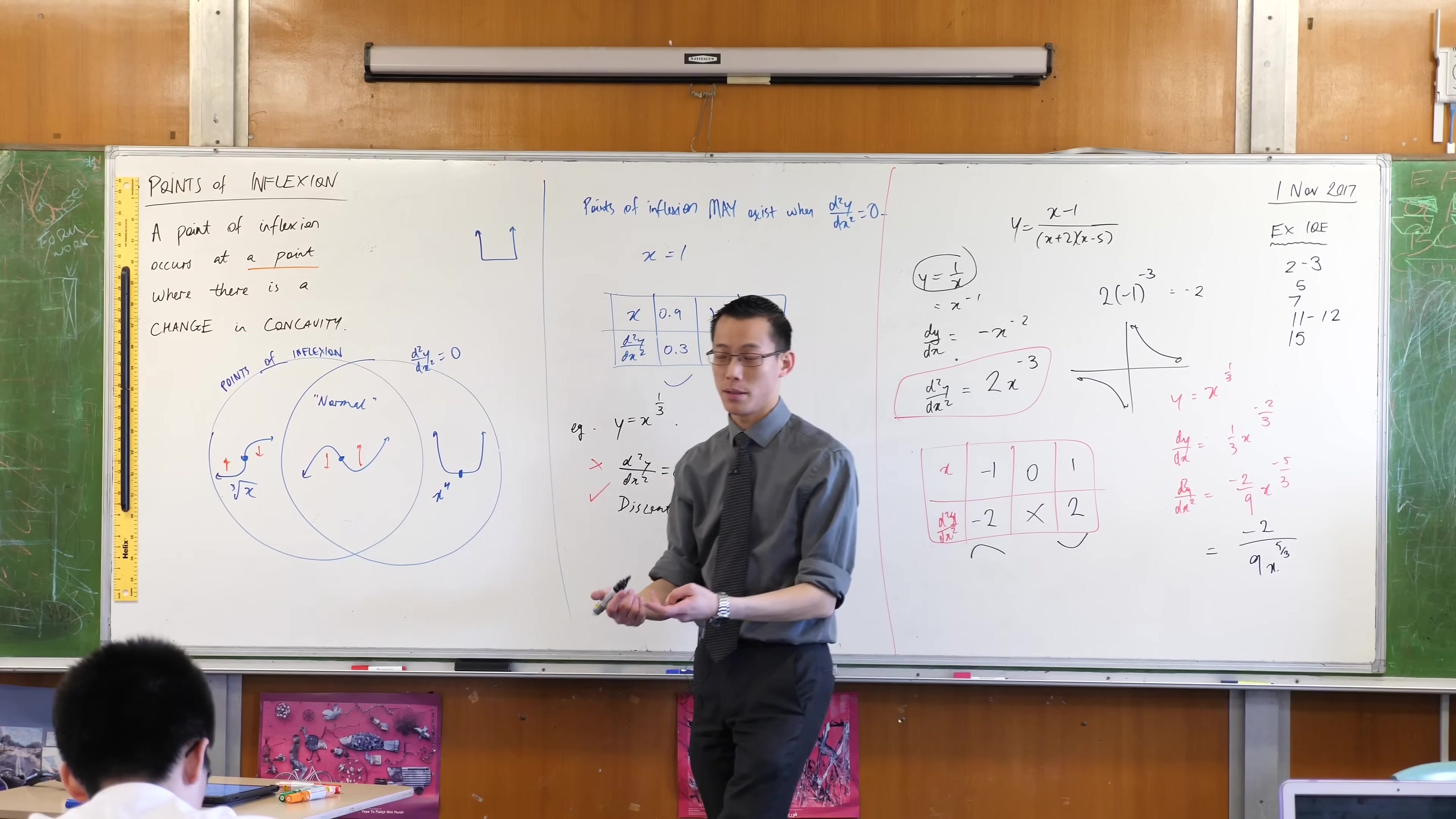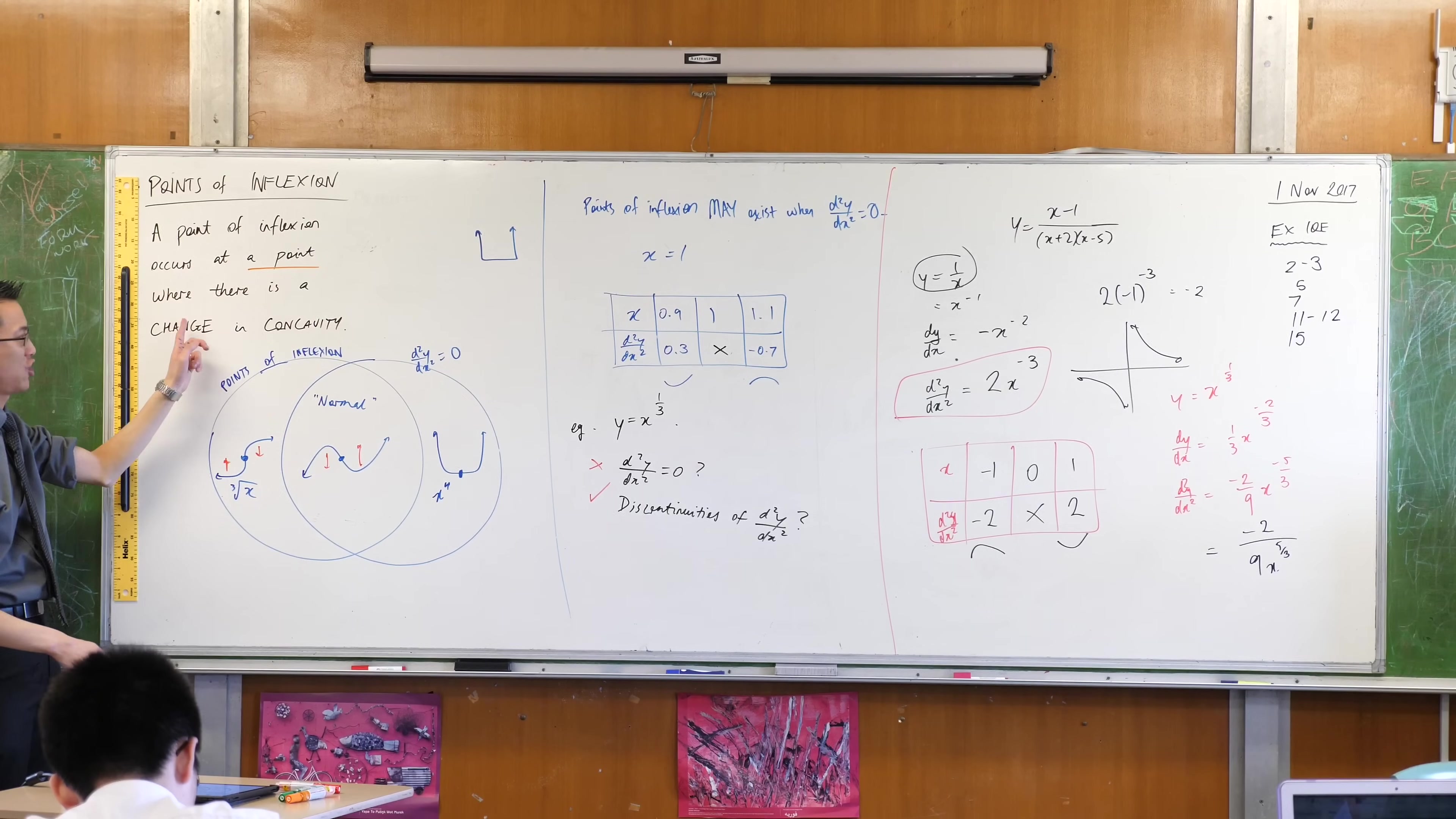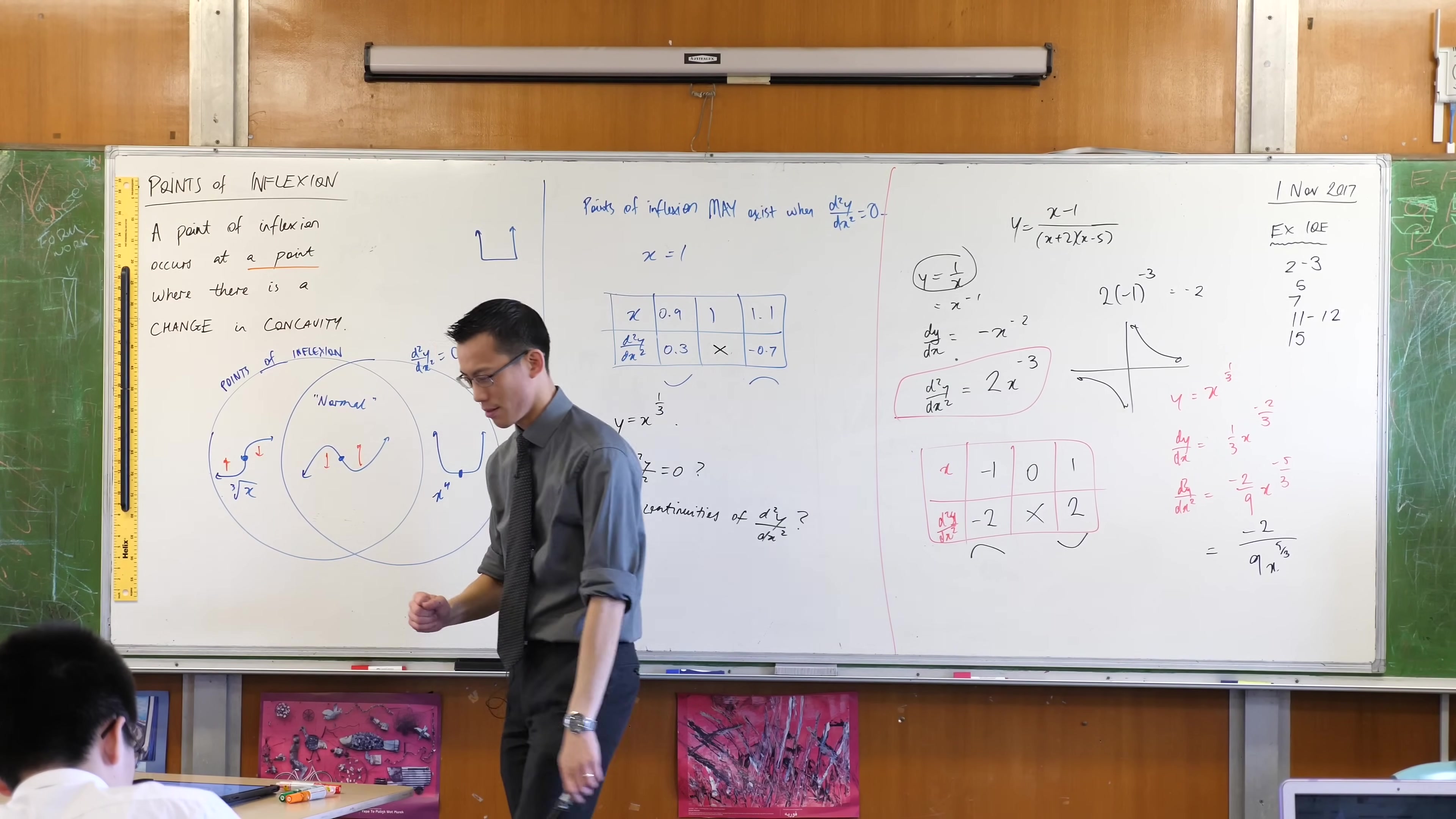Which is why I said a point of inflection occurs at a point. You have to be able to find that spot. It's not just a change in concavity in general, which this has. There's a change in concavity, but there's no way that it actually occurs, so there's no point of inflection. Does that make sense?